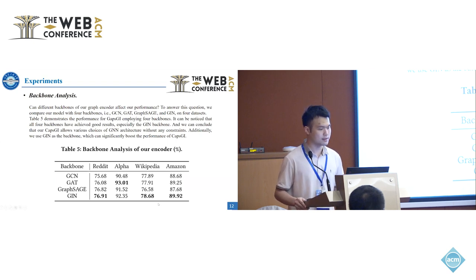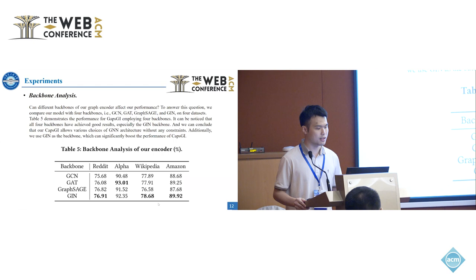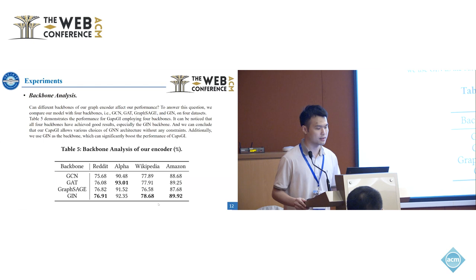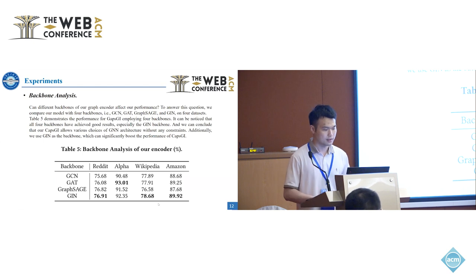We also conducted a backbone analysis. Our graph encoder supports four backbones: GCN, GAT, GraphSAGE, and GLN. It can be observed that all four backbones achieved good results, demonstrating the robustness of our framework across different encoder architectures.